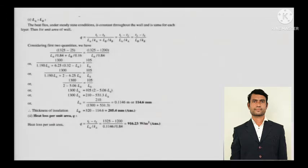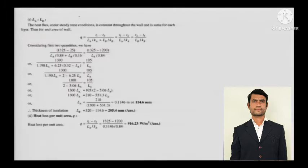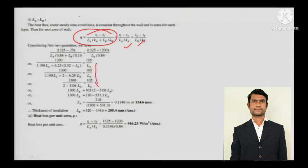Since heat is steady, the heat entering from this wall exits with the same magnitude. So Q equals (T1 minus T3) divided by (La/Ka plus Lb/Kb), and this will be the same as (T1 minus T2)/(La/Ka) and (T2 minus T3)/(Lb/Kb) because it is steady. Considering the first two quantities, you can calculate La through a little bit of mathematics.